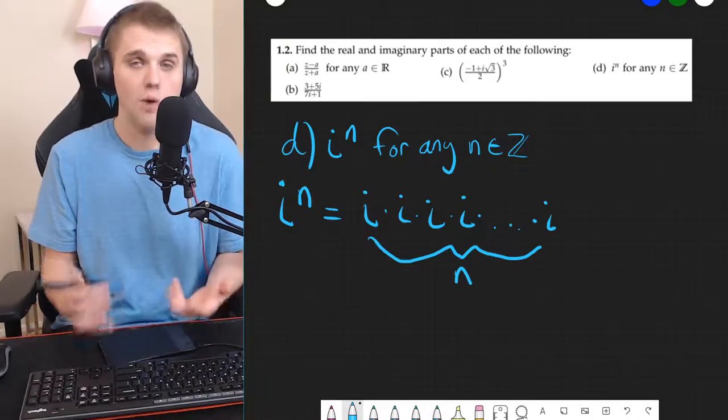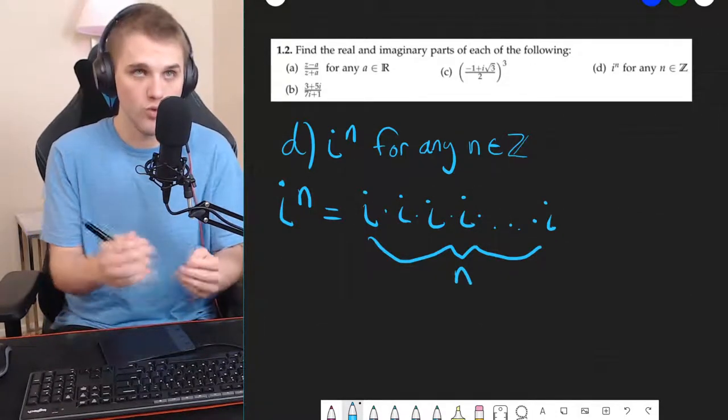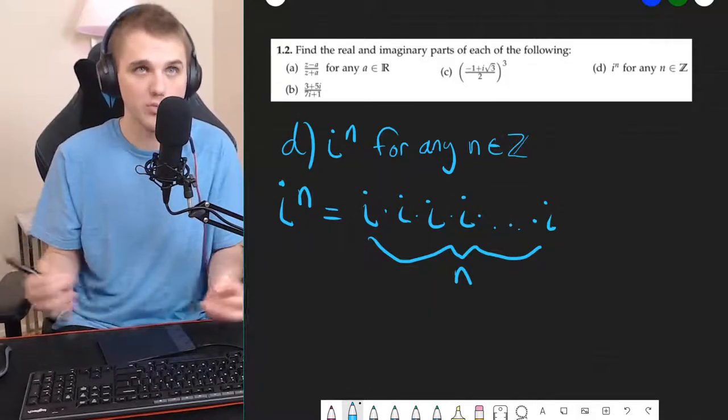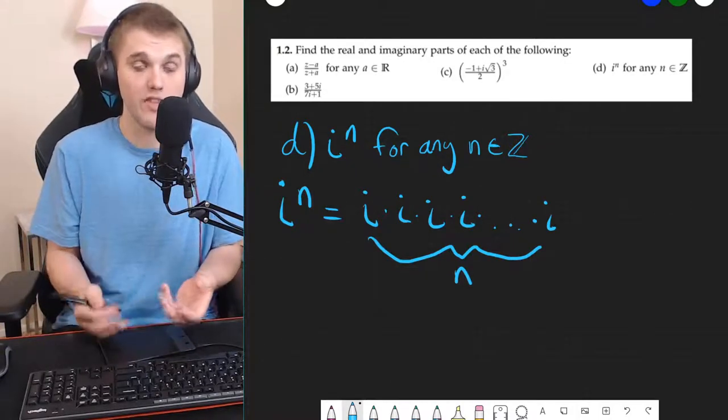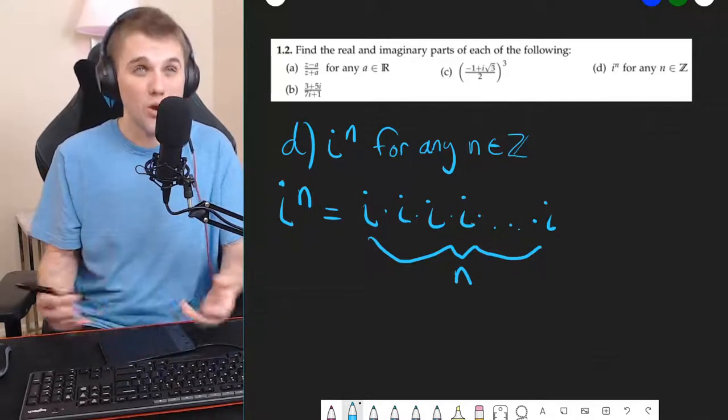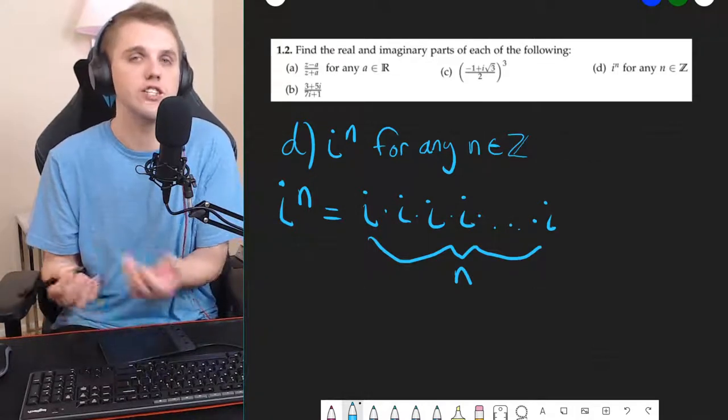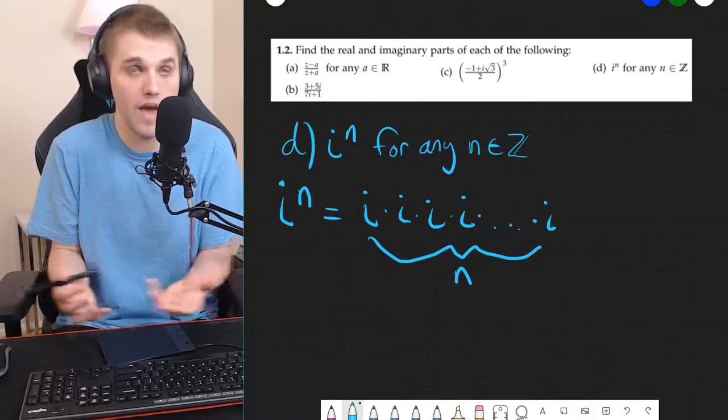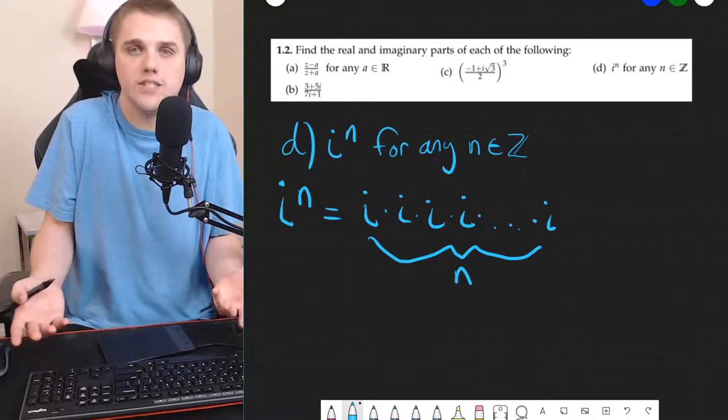Now, this doesn't really help me figure out what the real and imaginary part is because I would have to multiply all of these i's together to figure that out. And I don't really know how to do that considering I don't know how many i's I have here. I have n i's, but how many i's is that?